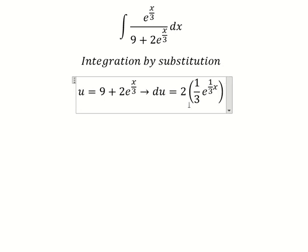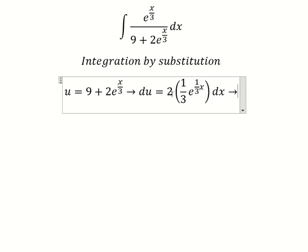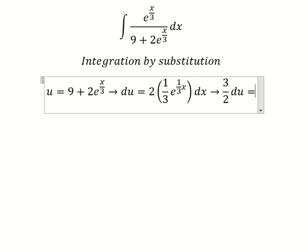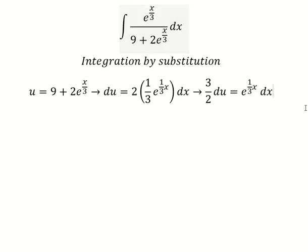After we take the first derivative, because we don't have the factor two over three, I will divide both sides by two over three. Now this gives us the expression in terms of u and dx.